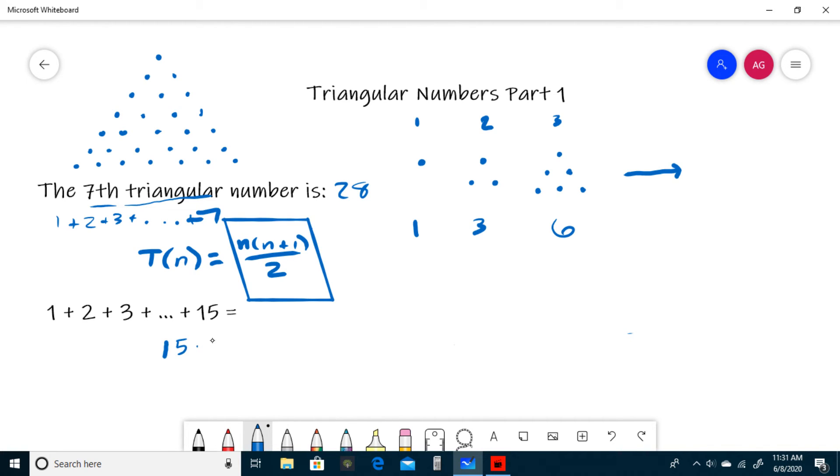So 15 times 16 divided by 2. 15 times 16 is 240, divided by 2 is 120.